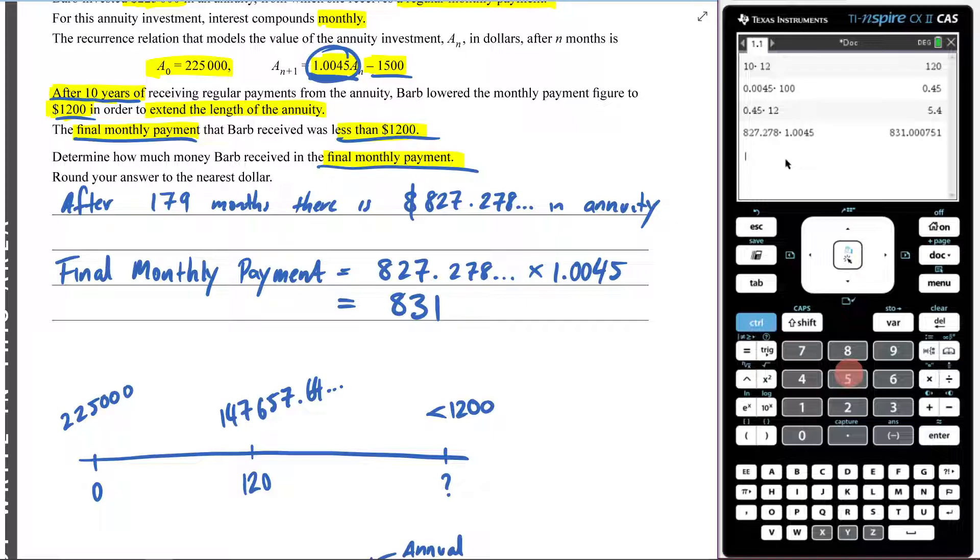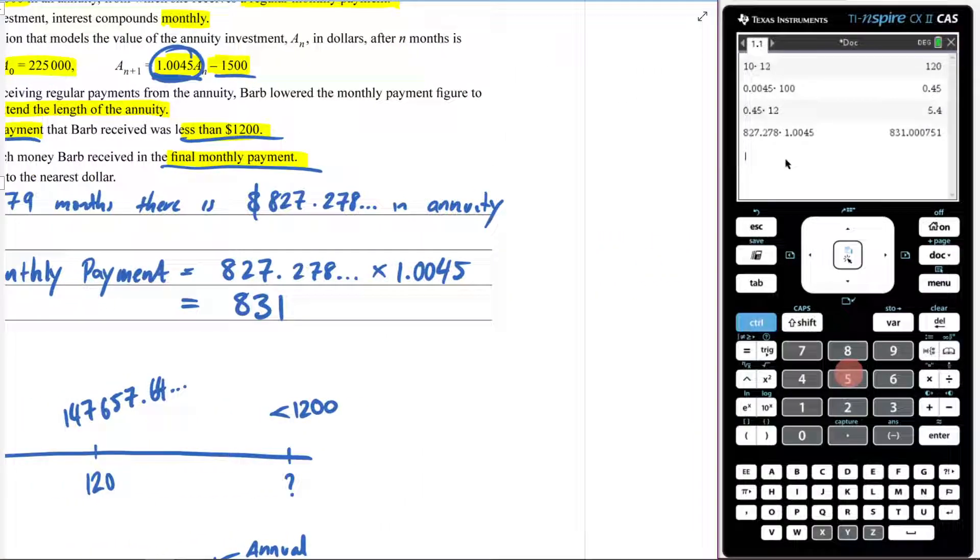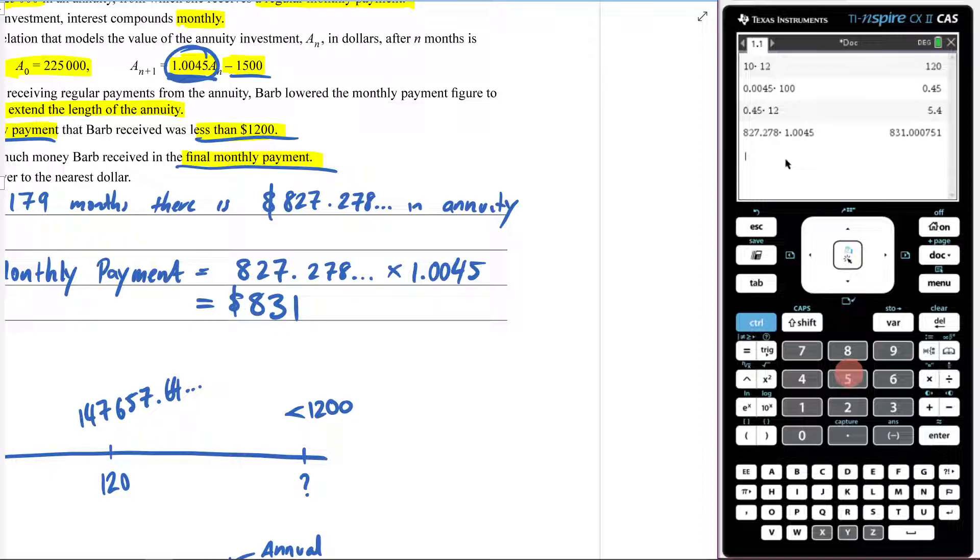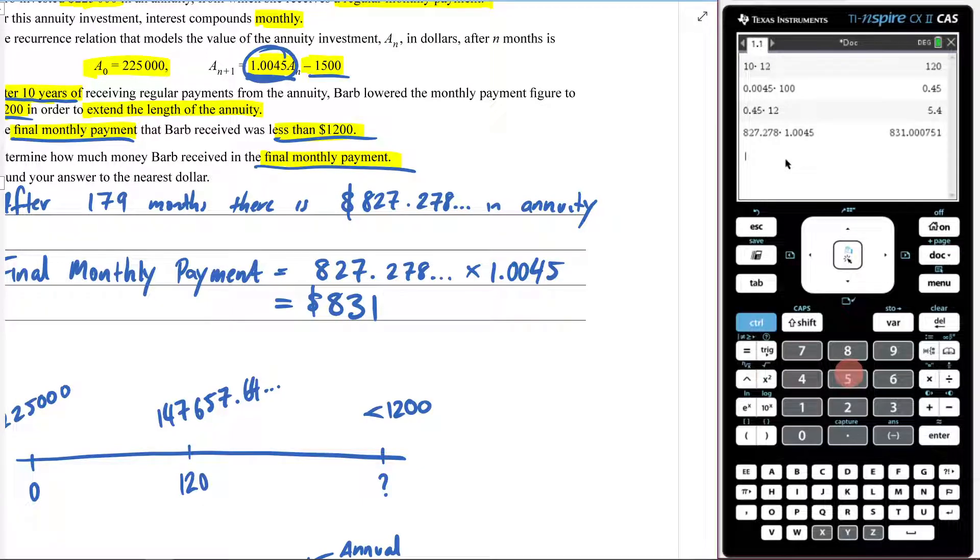So remember, it's not only what is left behind that 827, but also the interest generated on that money as well. So 831 is my answer. And if we look over here, 831, that is my answer. So hopefully you found that helpful. So round your answer to the nearest dollar, $831. There it is. Alright. See ya.